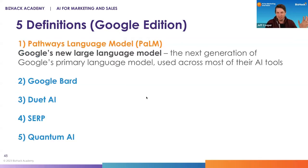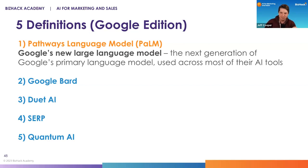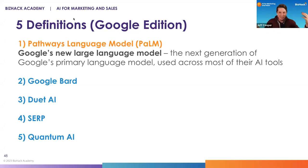The first definition we want to make sure everybody knows is PaLM, or Pathways Language Model. If you've been keeping up, you may have heard of an AI model called LaMDA, which was Google's original language model. PaLM is their current next-generation version of their language model. You can think of PaLM just like GPT-4, whereas Google Bard might be more like ChatGPT to the GPT engine underneath ChatGPT. PaLM is essentially Google's new language model.